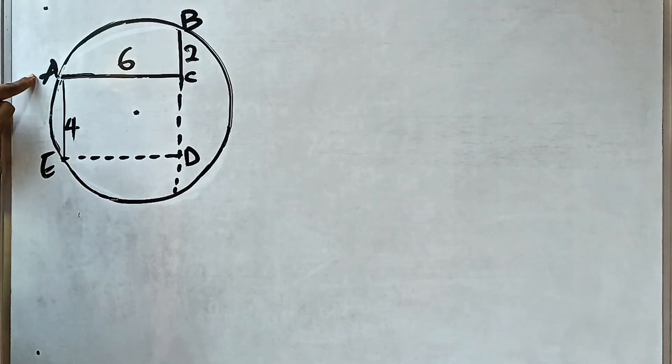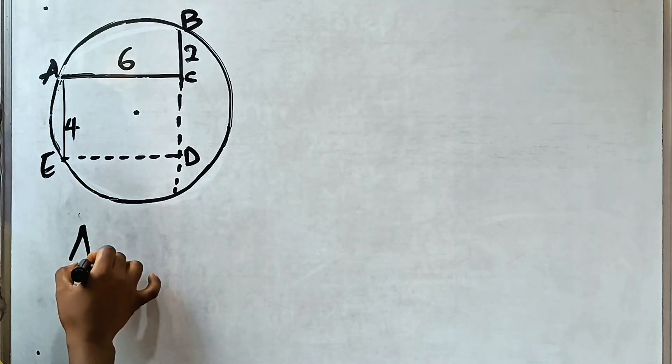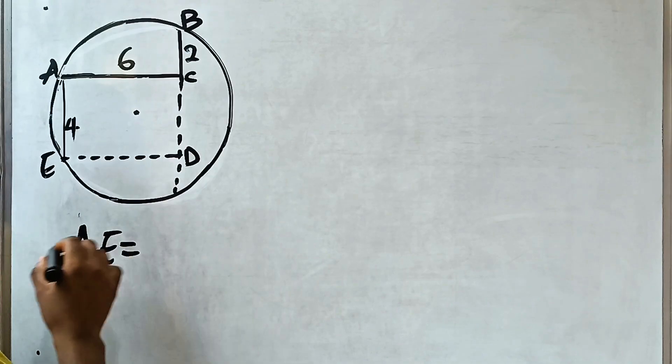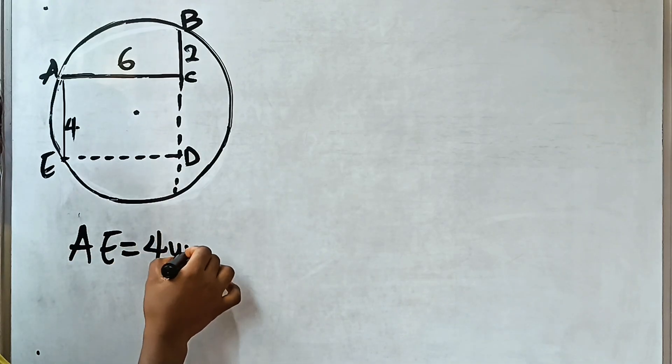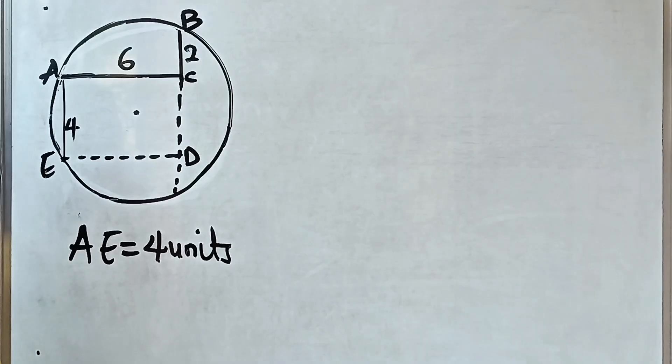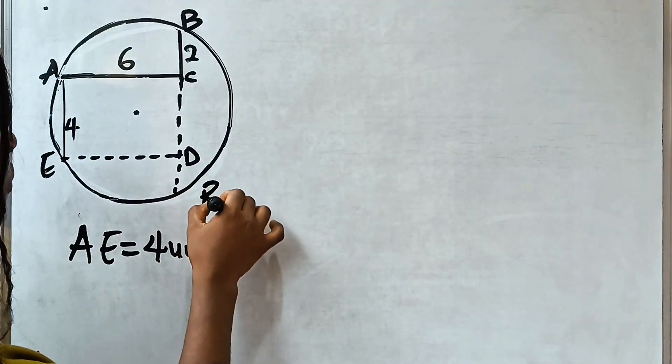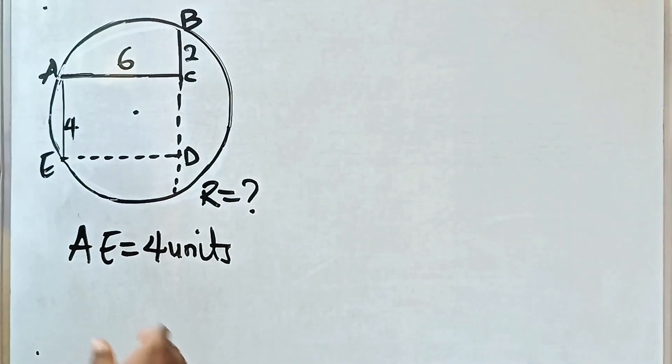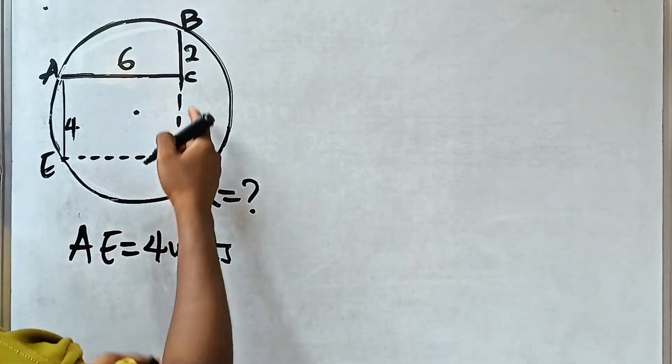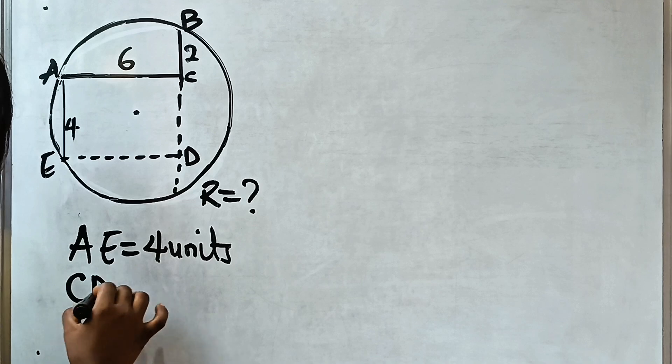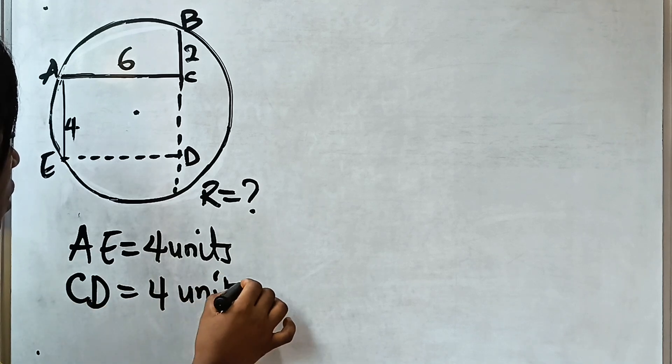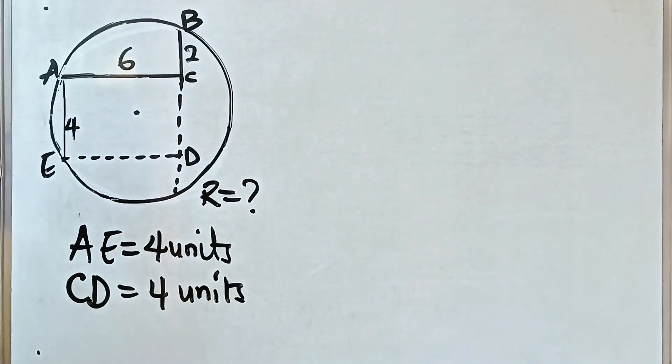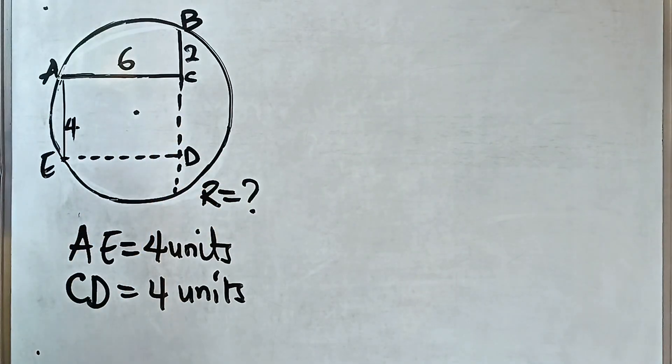From A to E is equal to 4 units. Remember, we are asked to find the radius of the circle. So AE is 4 units, and CD is also equal to 4 units. They are equal. This side is equal to this side.